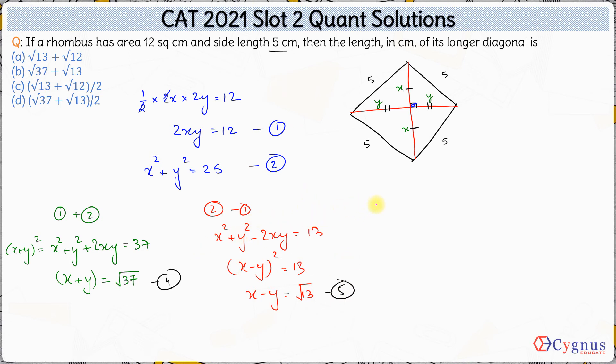So finally, what I need to calculate is I need to calculate the longer diagonal here. So how do we get the longer diagonal here? Simply add both these equations. So add the fourth and the fifth equation. We have twice of x is equal to root of 37 plus root of 13. This is when you add 4 and 5.